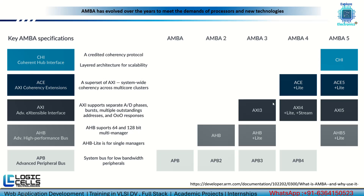ARM provides different versions: AMBA, AMBA 2, AMBA 3, AMBA 4, and AMBA 5. APB — Advanced Peripheral Bus — is used for low-bandwidth peripherals. AHB — Advanced High Performance Bus — supports 64-bit and 128-bit multi-master configurations. AHB Lite is a variant used for single-master designs.